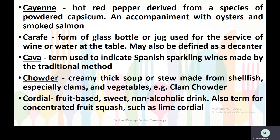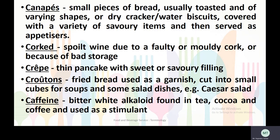An example of chowder is clam chowder. Cordial is a fruit-based sweet non-alcoholic drink, also termed for concentrated fruit squash such as lime cordial. Canapés are small pieces of bread — usually toasted and of varying shapes — or dry crackers and water biscuits, covered with a variety of savory items and served as appetizers.